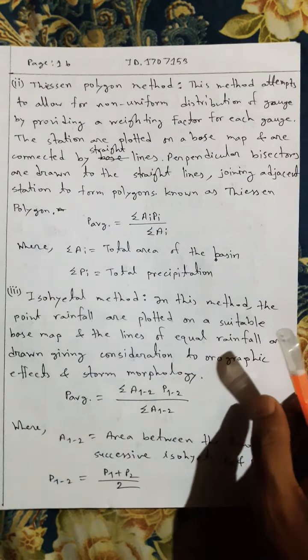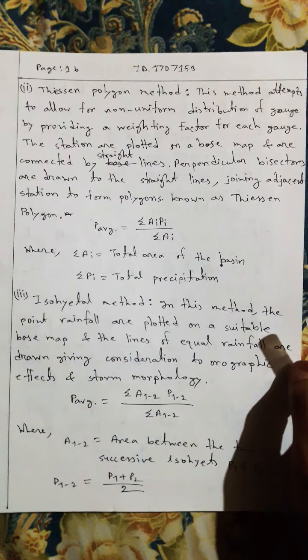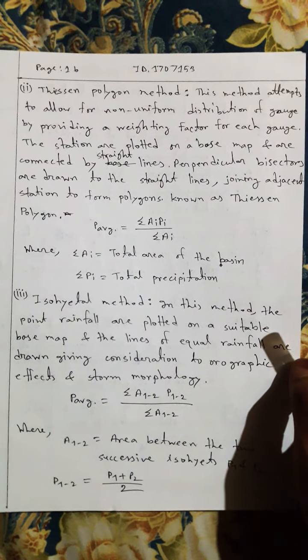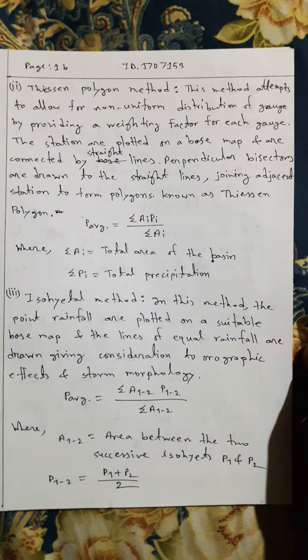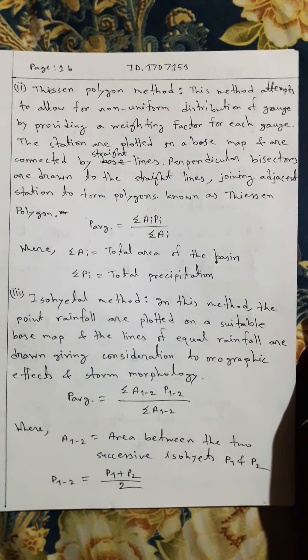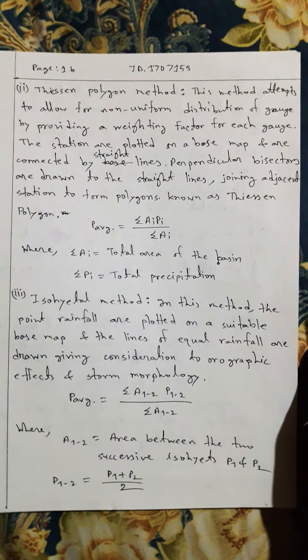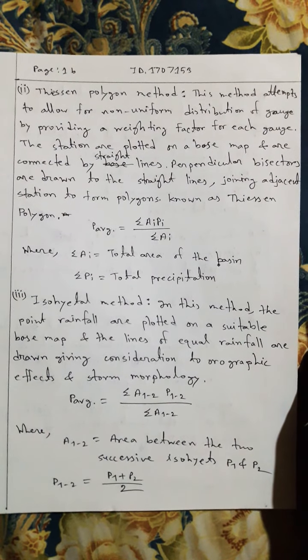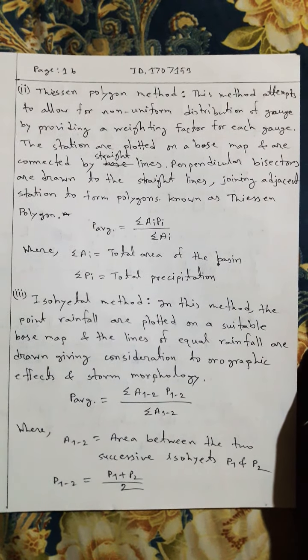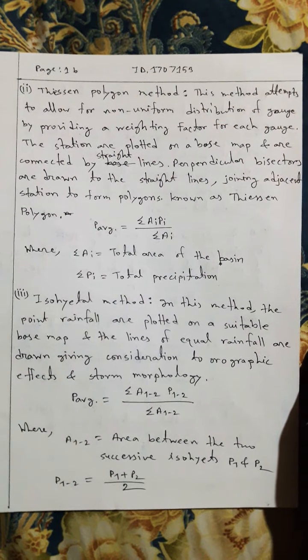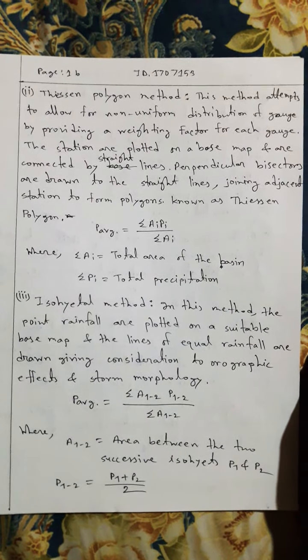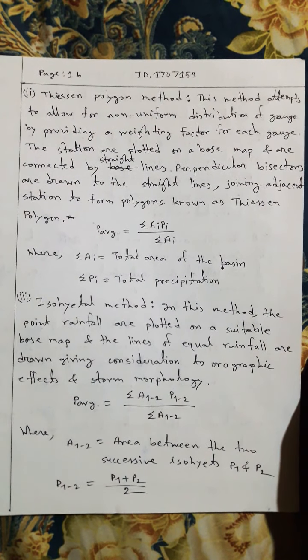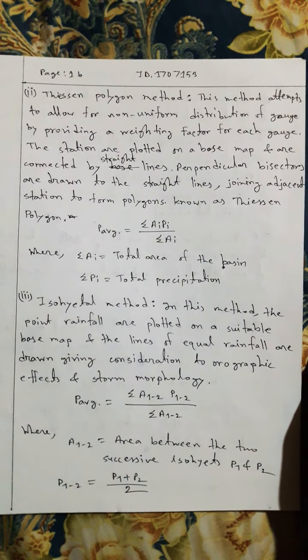Thiessen polygon method: This method attempts to allow for non-uniform distribution of gauges by providing a weighting factor for each gauge. The stations are plotted on a base map and are connected by straight lines. Perpendicular bisectors are drawn to the straight lines joining adjacent stations to form polygons known as Thiessen polygons.